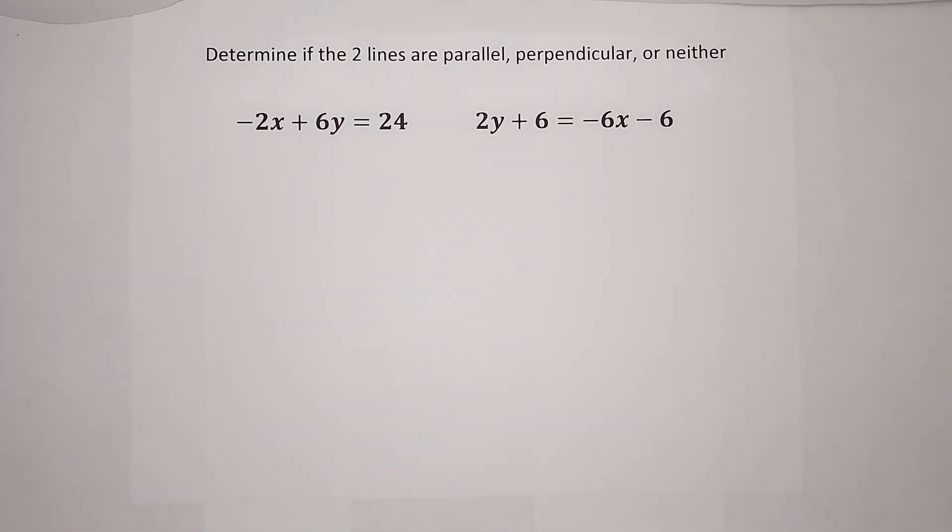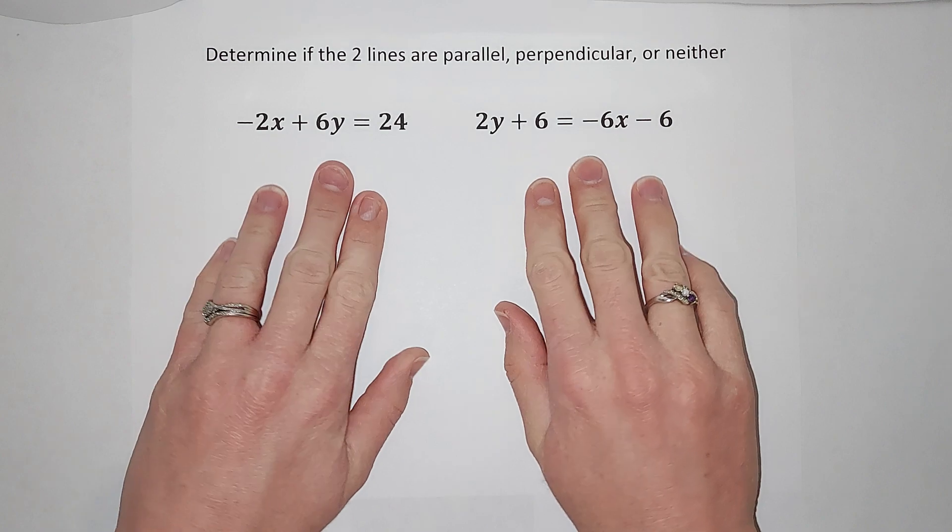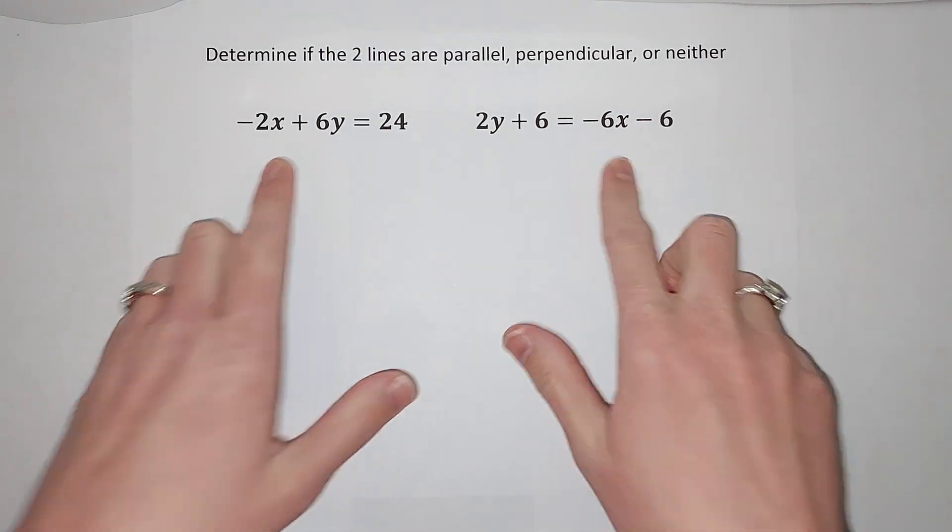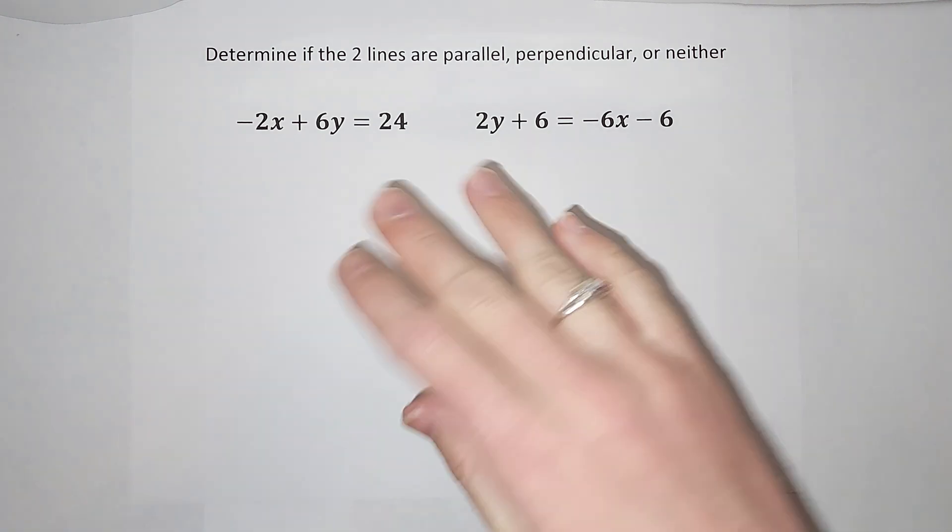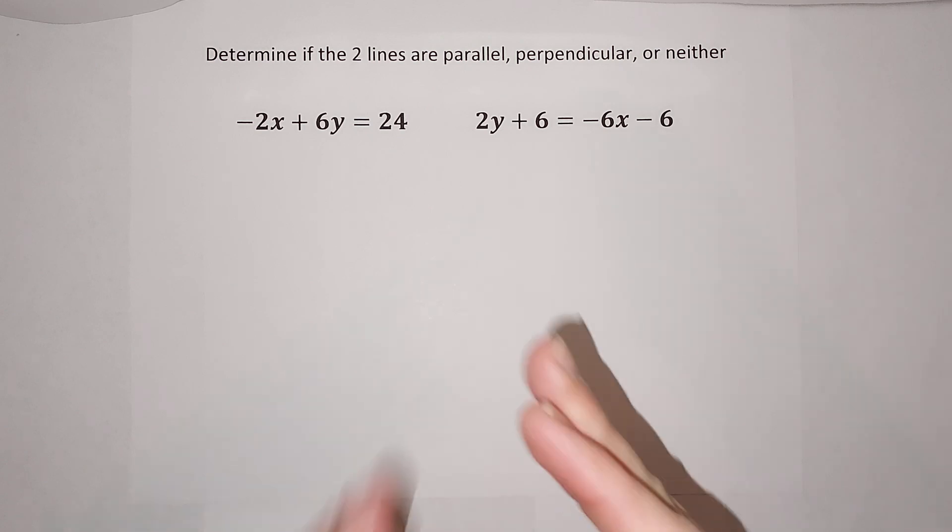Hey guys, we are being asked if the graph for each of these lines, if the two of them are parallel to each other, perpendicular, or neither. Parallel means two lines that never cross, perpendicular means they cross at a 90 degree angle, and neither means they just cross each other once.